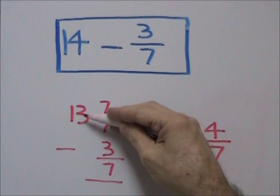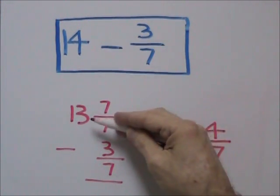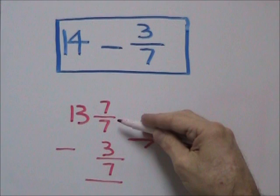We add the one whole to 13 and we get 14. So, 13 and 7 sevenths has the same value as 14.